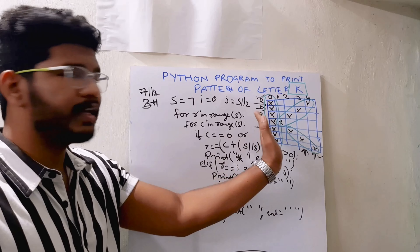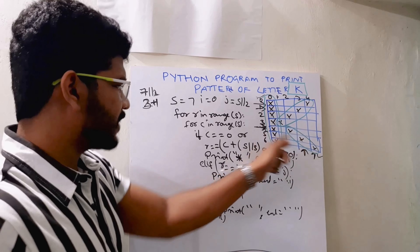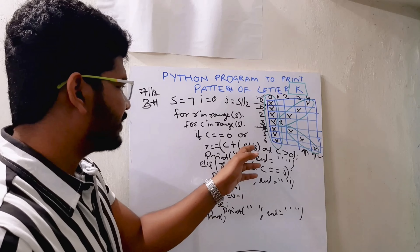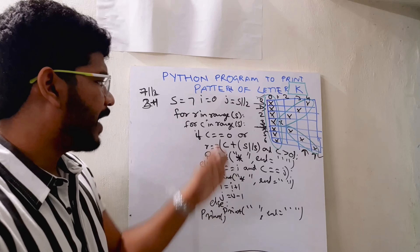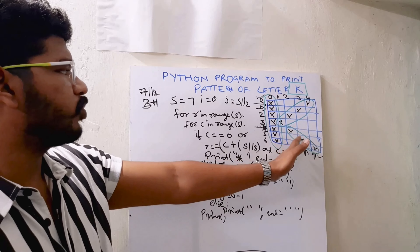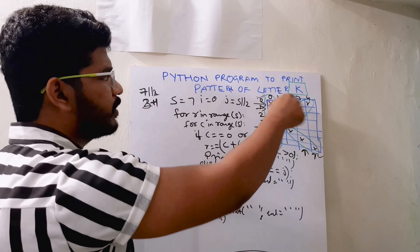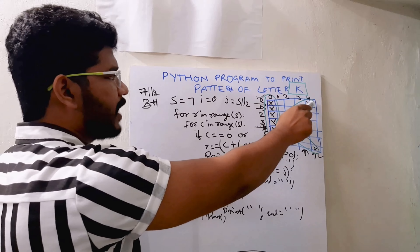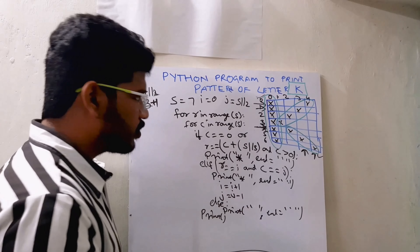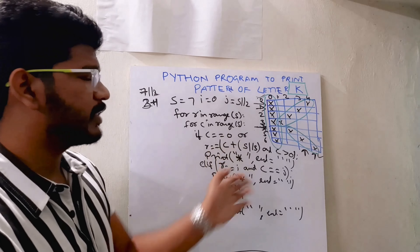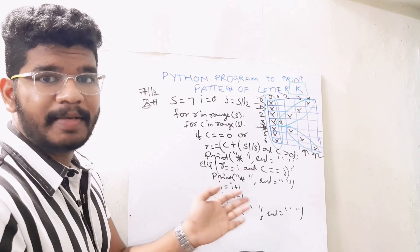So the three conditions are: first column (c == 0), printing the upper diagonal stars (r == c + s//3 and c > 0), and the lower diagonal (row == i and column == j, decrementing j and incrementing i). For all other cases I print spaces. That's how we can print the pattern of letter K. Hope you understood. Now I will go into my PyCharm IDE to execute and see the output.